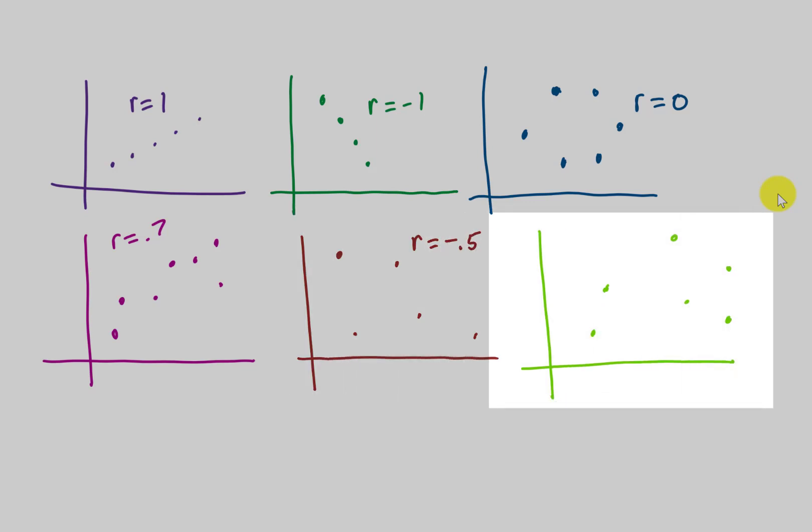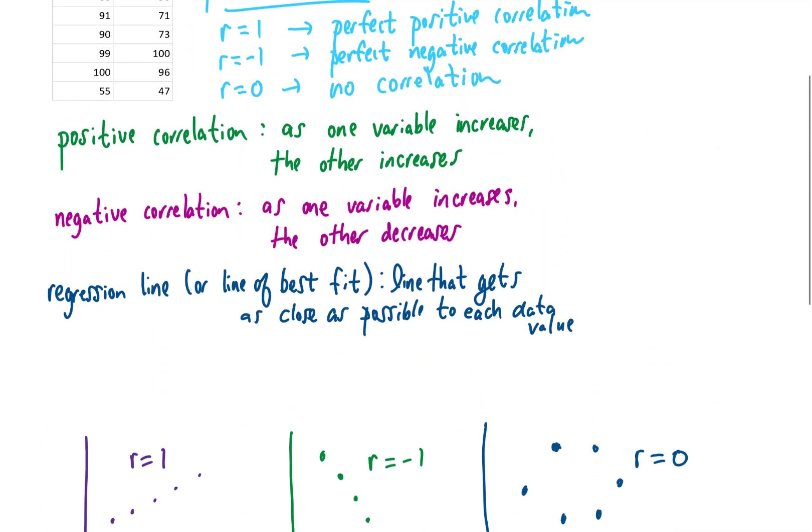For our last graph, it looks like maybe this data does have a bit of positive correlation. If we drew a line of best fit through it, I think it would slope upwards. So the R value is going to be positive, but it's pretty loosely correlated, so I'm going to say that maybe that R value is about 0.3. So hopefully that gives you some idea of what our correlation coefficient or R values look like.